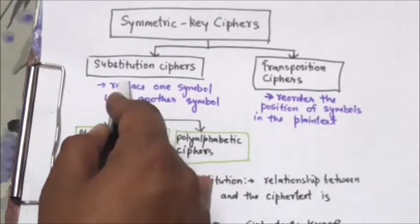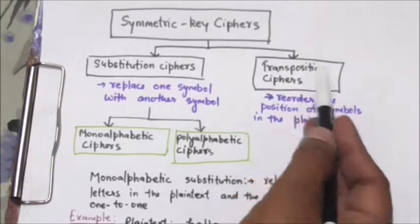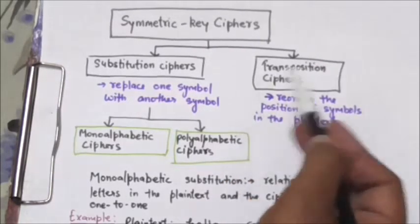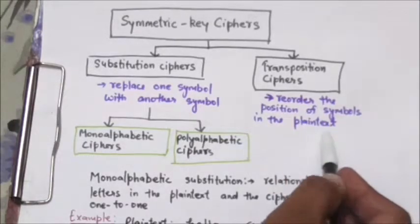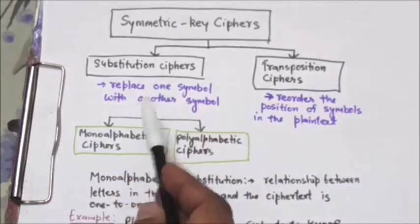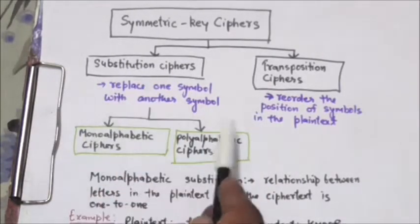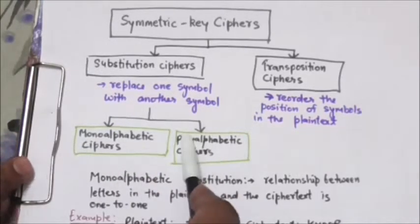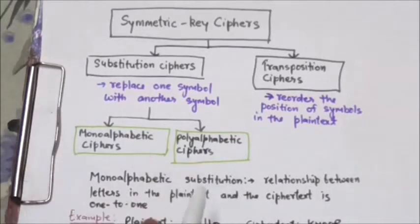In a transposition cipher, we reorder the position of symbols in the plain text. Substitution ciphers can be further categorized into two categories: mono alphabetic ciphers and poly alphabetic ciphers. In this tutorial I will give you the introduction of mono alphabetic ciphers.